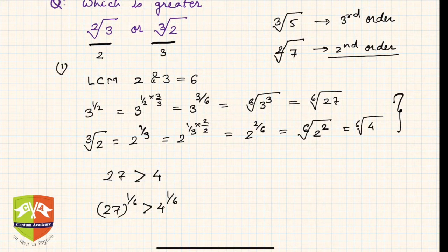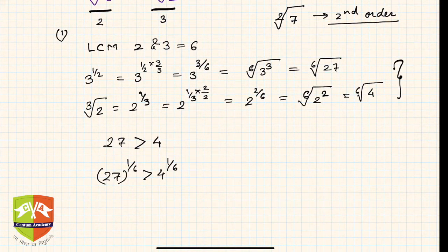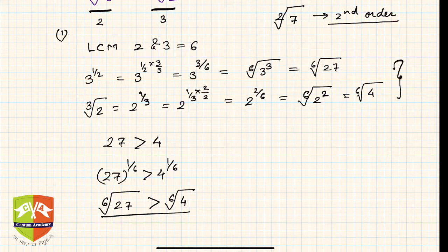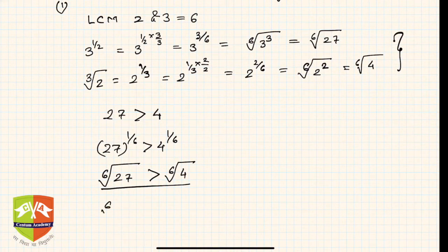So hence, sixth root of 27 is greater than sixth root of 4.